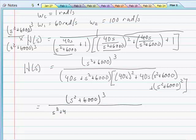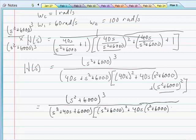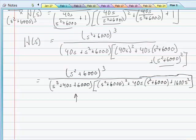And I will take one more step with this: s squared plus 6,000 quantity cubed divided by s squared plus 40s plus 6,000 times s squared plus 6,000 quantity squared plus 40s times s squared plus 6,000 plus 40s quantity squared.